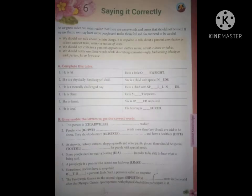Chapter number 6 is, saying it correctly. In this chapter, you have studied that, there are some words and terms that should not be used. If we use them, we may hurt some people and make them feel sad. So, we need to be careful. For this chapter, you need to revise the questions given in the book.